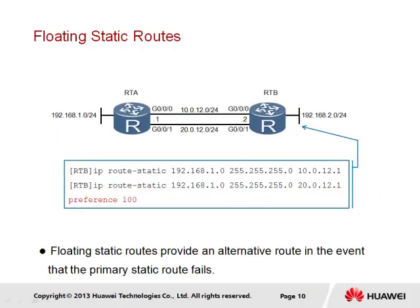Looking deeper at static route applications, we examine the concept of the floating static route. The main application of the floating static route is to allow an alternative path to be made available in the event that the primary route is lost. This is made possible by the routing decision rules — in particular the rule defining the preference of a route. By manually changing the preference of a static route to the same destination network, it is possible to allow that route to remain inactive until the primary static route fails.